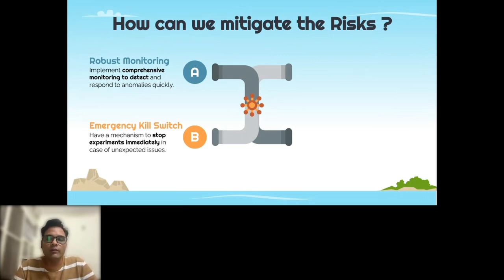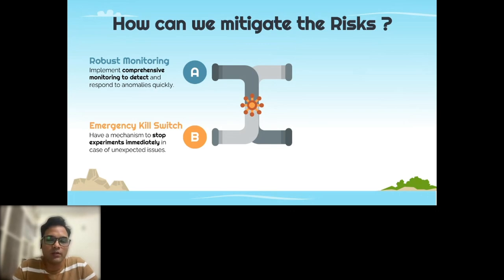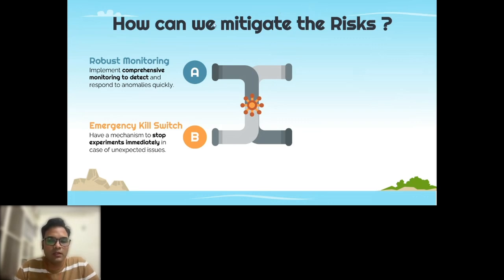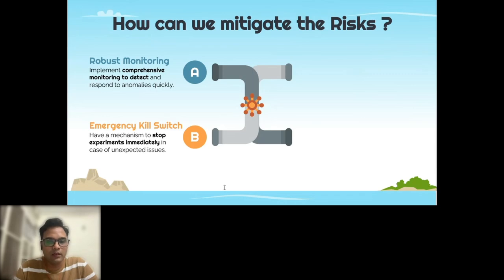Emergency kill switch — you've documented all your test cases and know the hypothesis, say, that introducing network latency on the metadata service will mean the UI won't come up properly. But when you actually introduce the chaos and see different behavior than expected, and you don't know how to identify, isolate, and resolve it, an emergency kill switch is a must to stop the experiment. In Litmus Chaos, there is a halt button that stops all experiments and reverts back to the stable condition. We have experience going into such problems and immediately halting experiments.